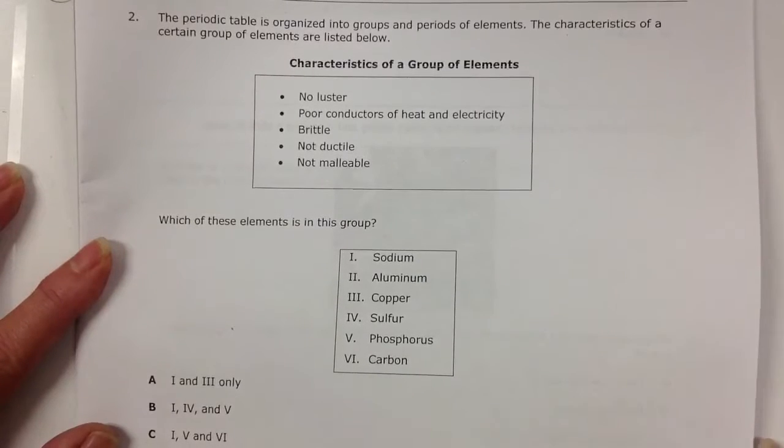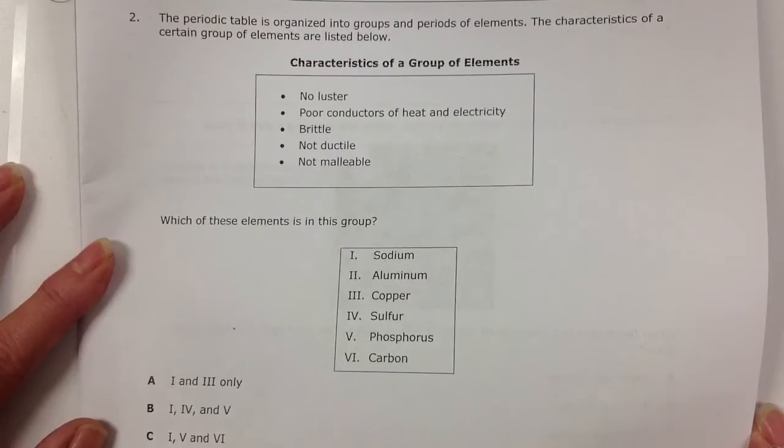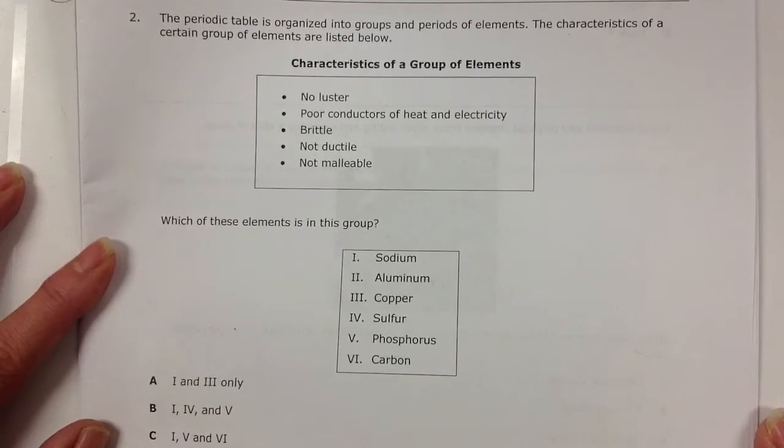Question 2. The periodic table is organized into groups and periods of elements. The characteristics of a certain group of elements are listed below.